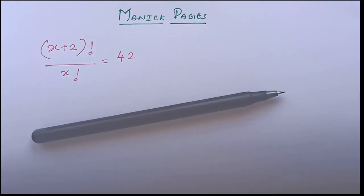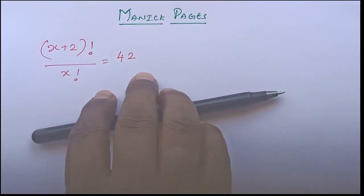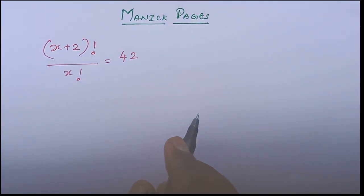Hello, welcome to Monique Pages. In today's page, x plus 2 factorial divided by x factorial is equal to 42.